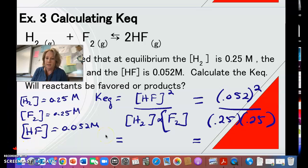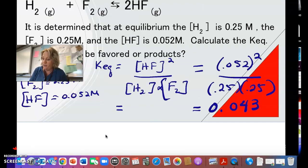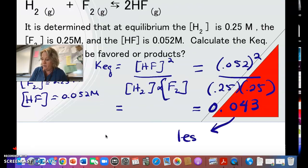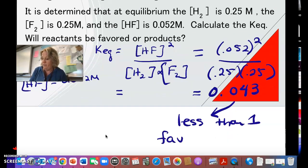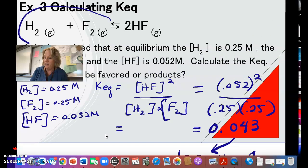So when you calculate that, we get an answer of 0.043. So that is less than one. So that means that I'm going to have a reaction that favors the reactants, which means I'm going to have more reactants than product. I'm going to have both of them in the container, wherever this reaction is happening, but I'll have more reactants because it is less than one.